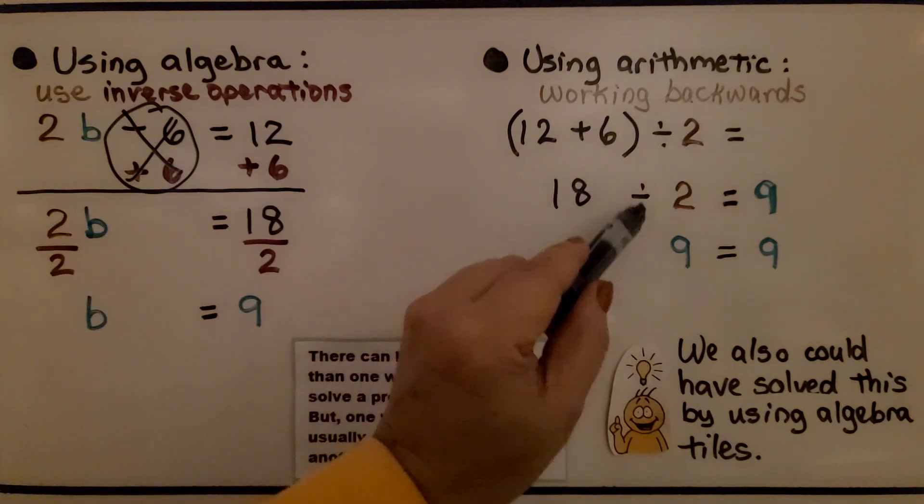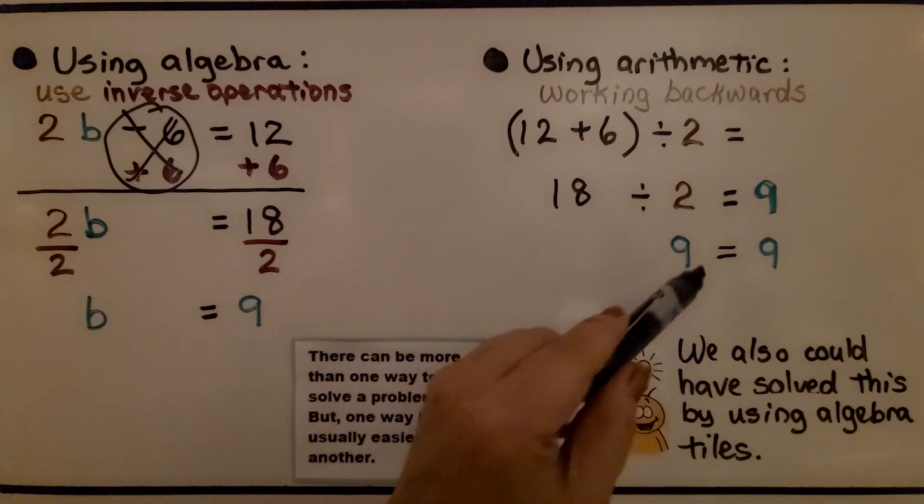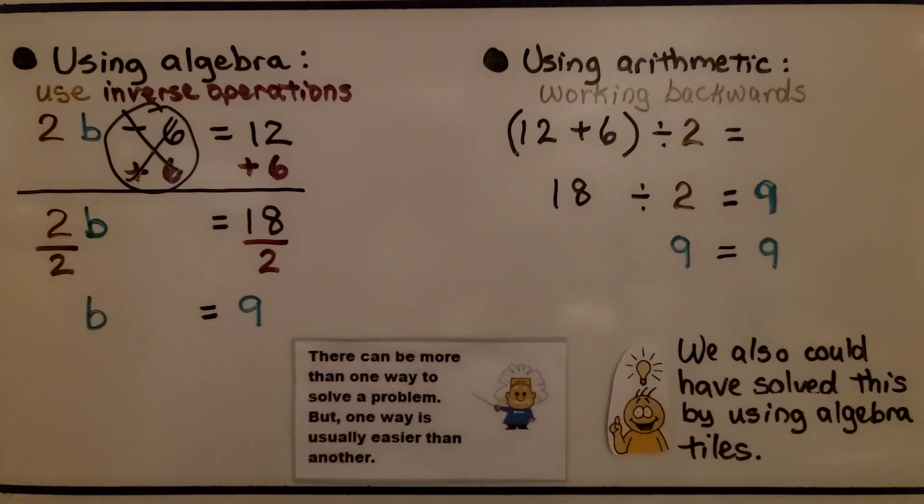That got us 18 divided by 2, which equals 9, and 9 equals 9. We also could have solved this by using algebra tiles. There's more than one way to solve a problem, but one way is usually easier than another. We can change a light bulb by climbing a ladder and putting the bulb in. We can also stand on top of a chair. There's different ways to solve problems.